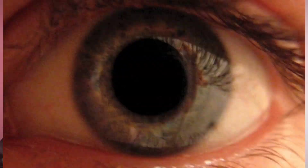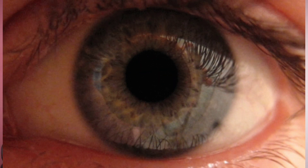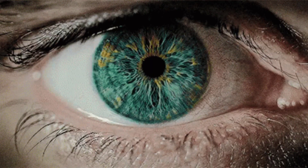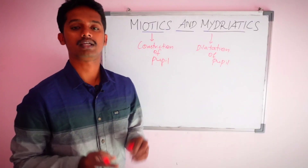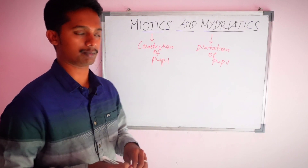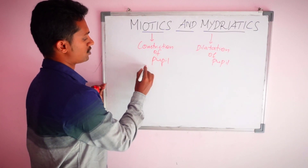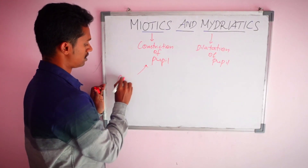Pupil constriction is caused by miotic drugs, while pupil dilation is caused by mydriatic drugs. Miotic drugs are naturally occurring.